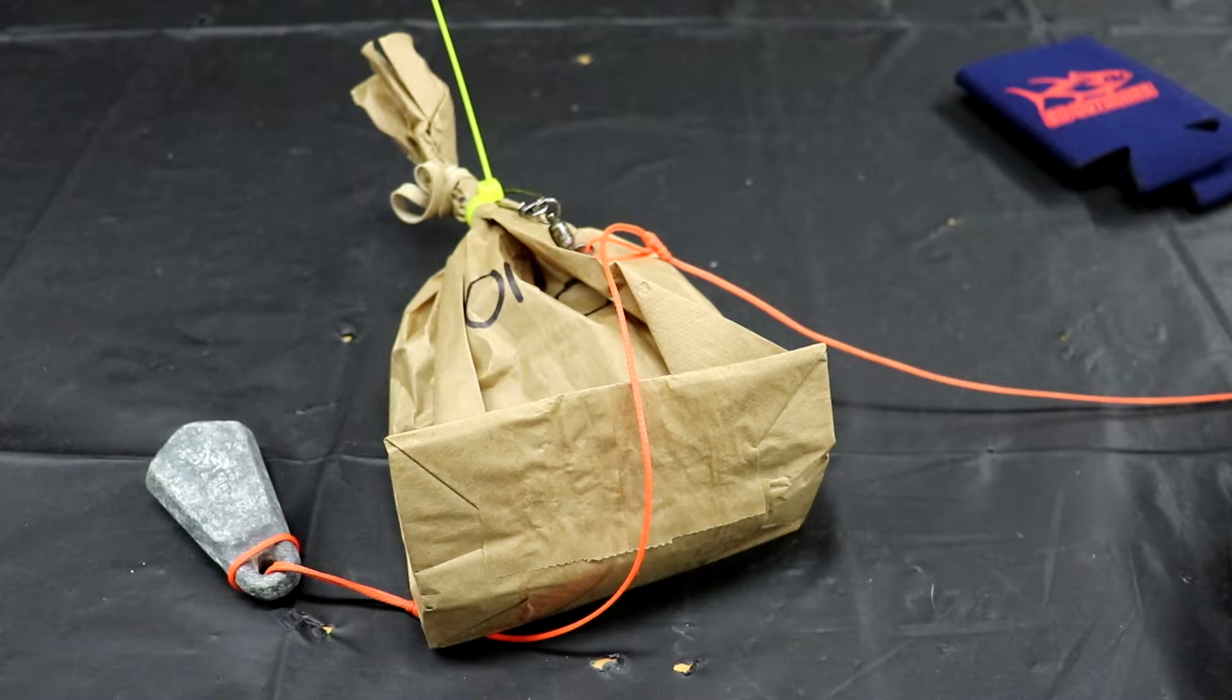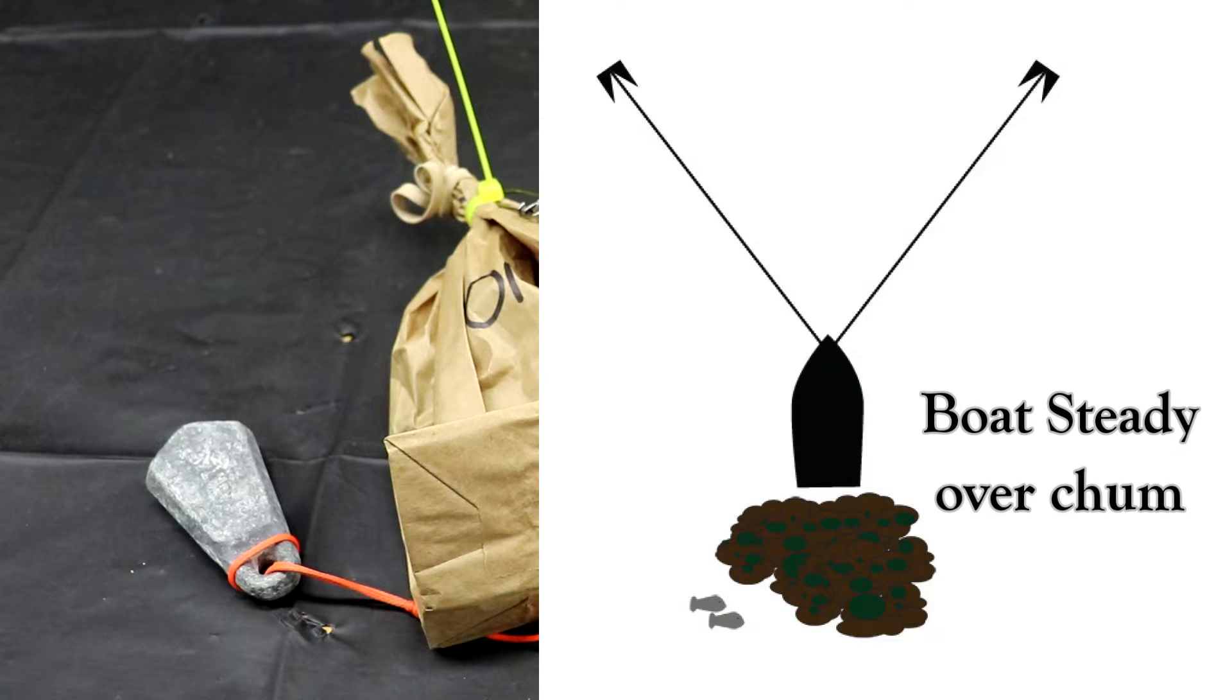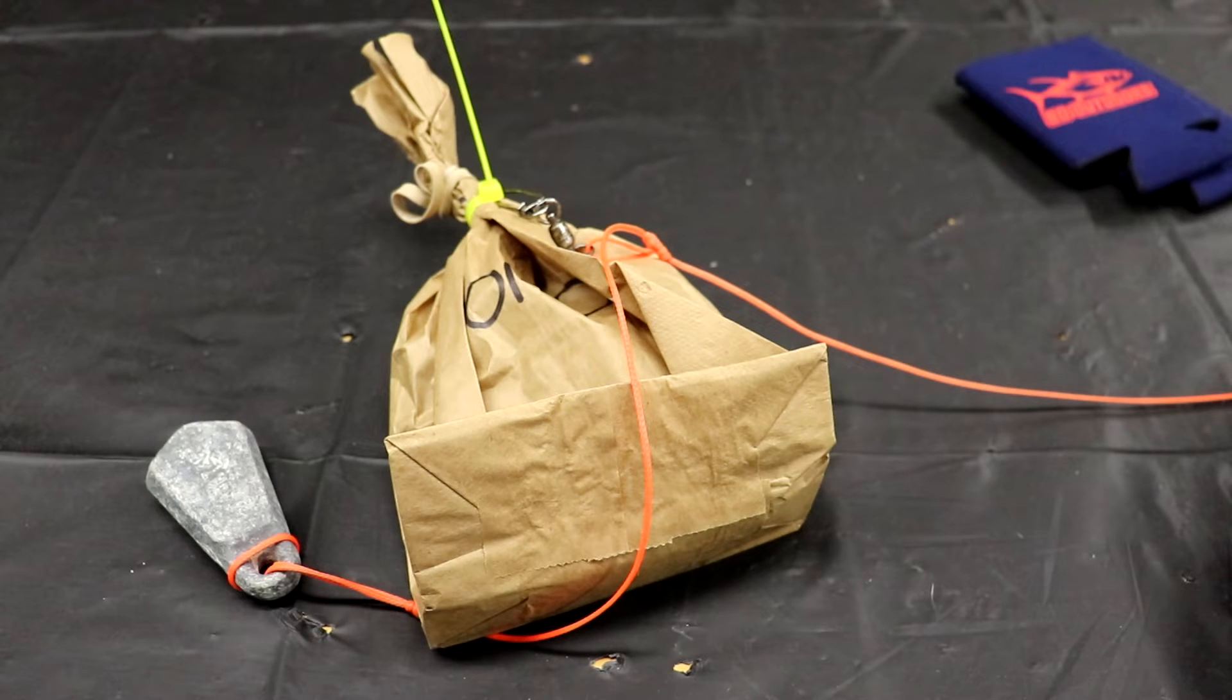You're gonna get that chum directly under the boat, and of course the key to success also is double anchoring. So when you double anchor that boat's not gonna swing. So again, everything that you're putting down is right under your boat where your baits are gonna be and your chum and everything.